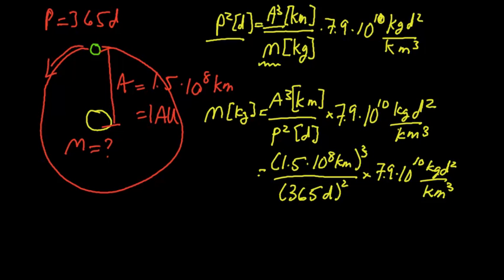Notice that the units check out. The kilometers cubed here are going to cancel with the kilometers cubed in the constant. The day squared cancels with the day squared here. So, we can do the calculation with our calculator.